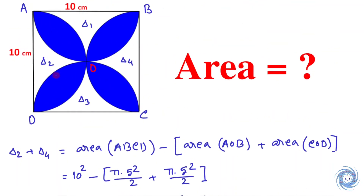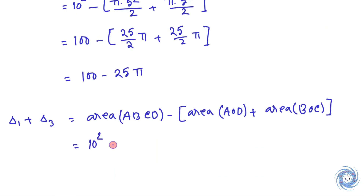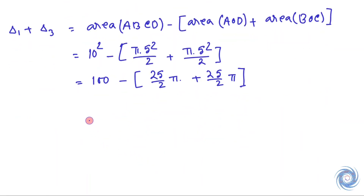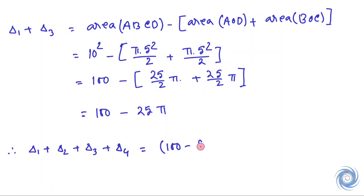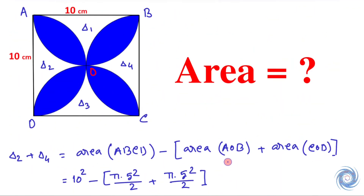Here AOB is the semicircular area and the radius of the circle is 5 cm. From here we get the combined white space area, so we have obtained the area of the white space.